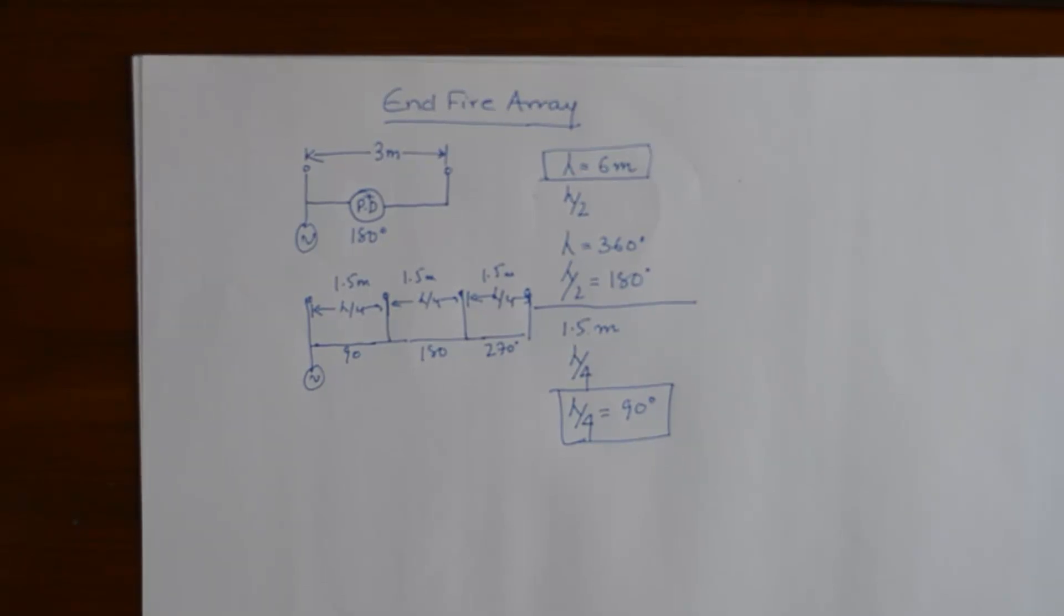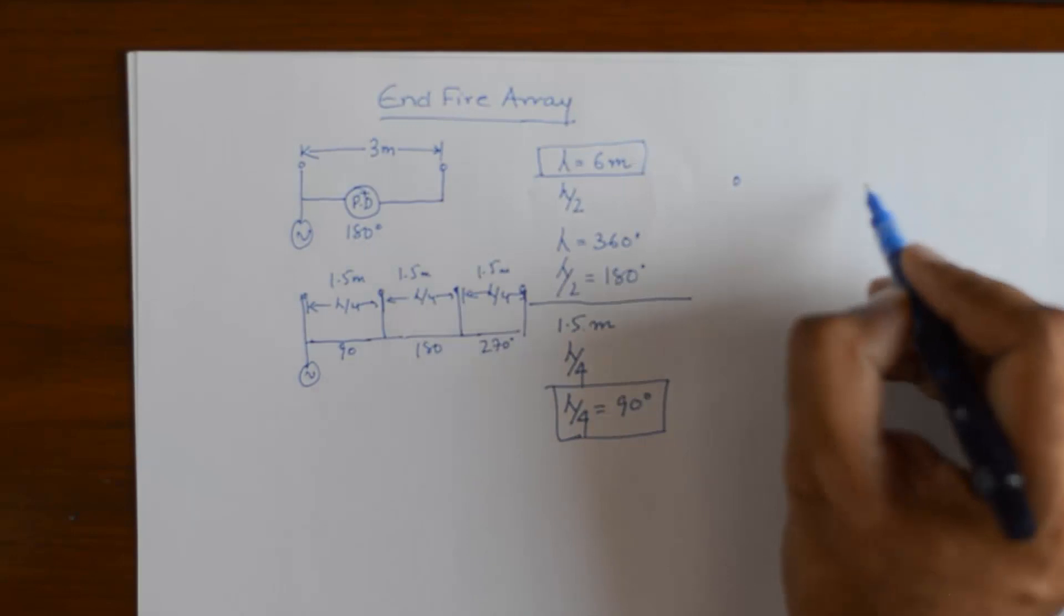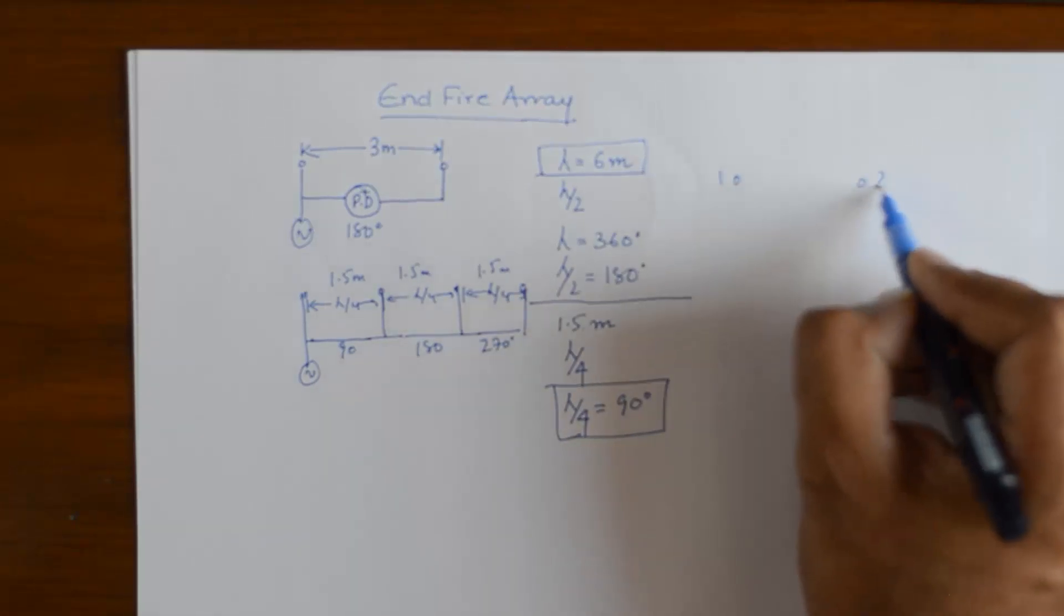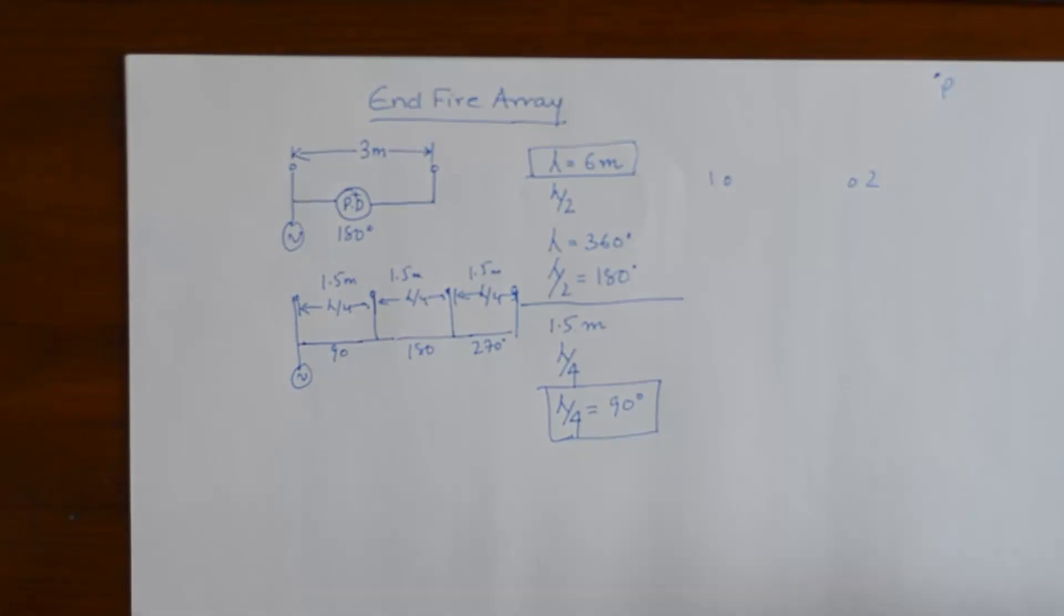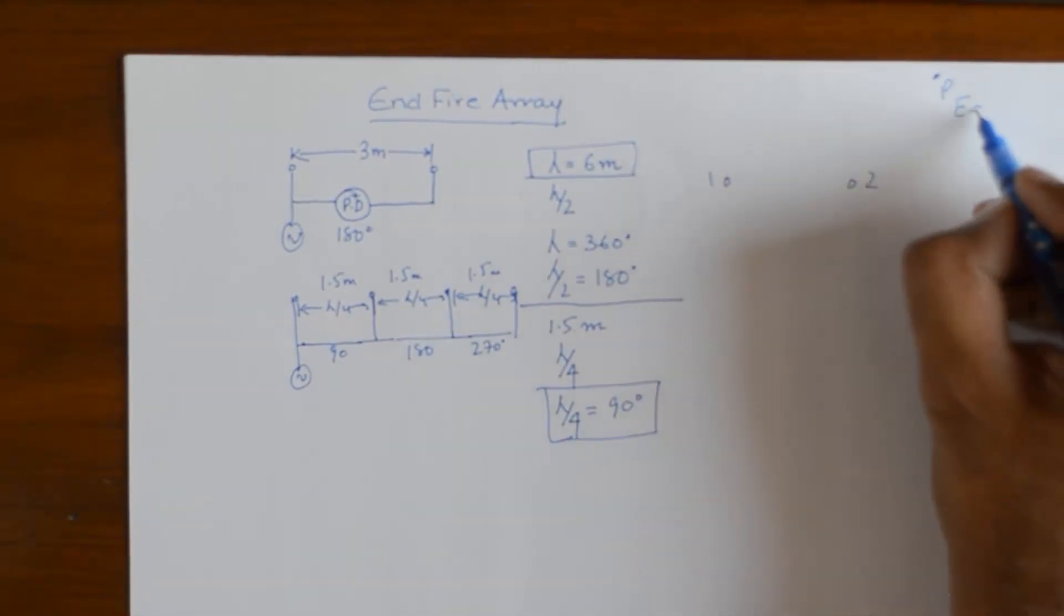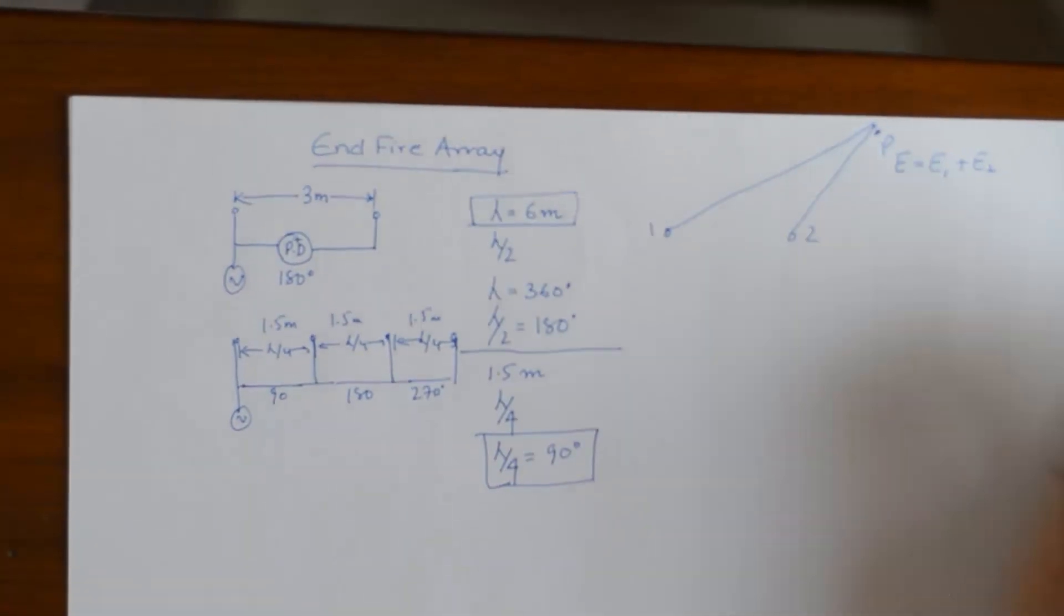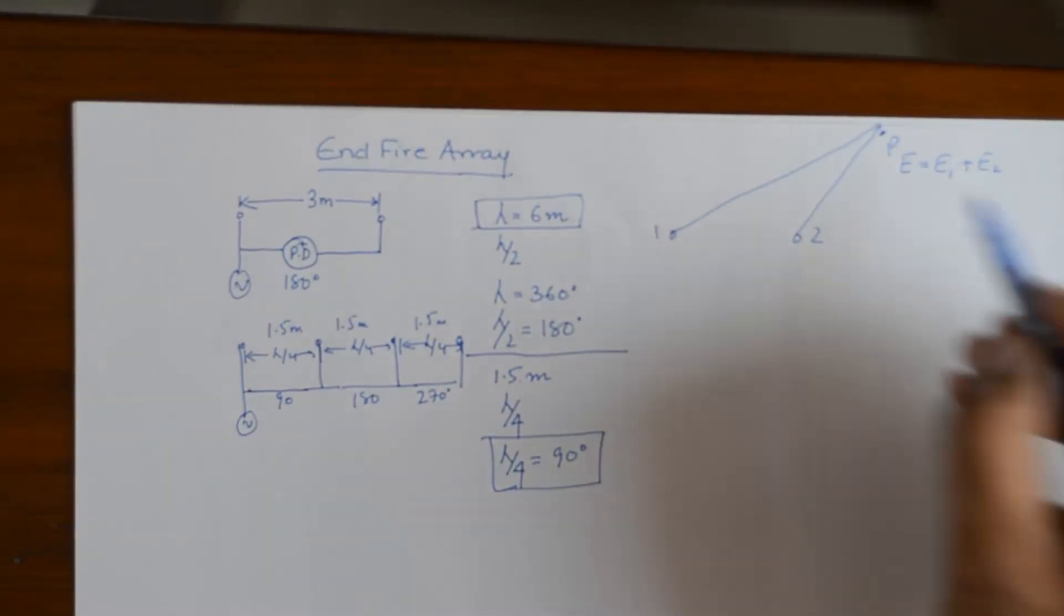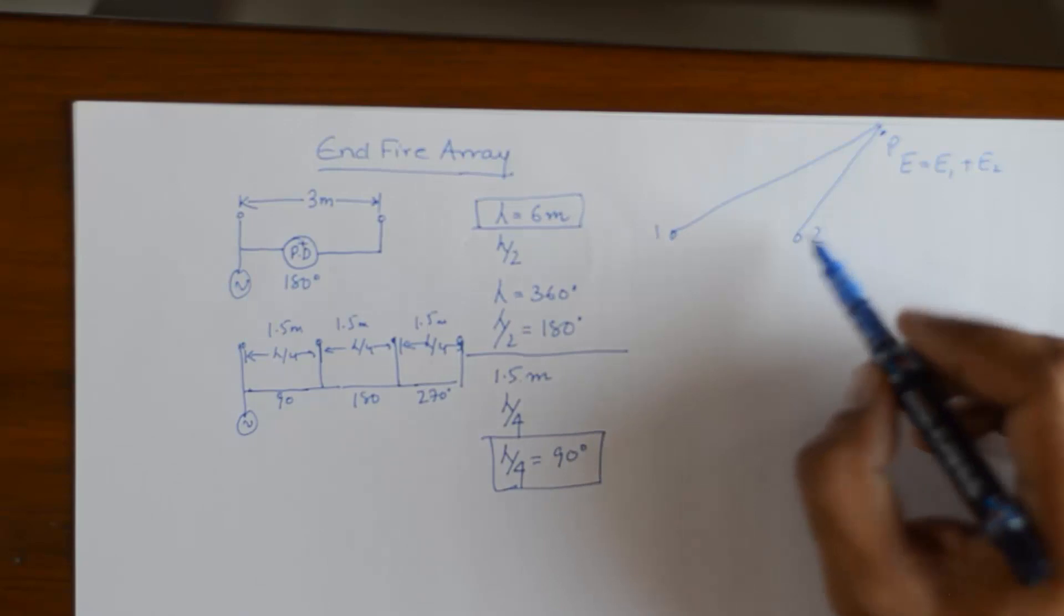So that's the basic design criteria of endfire array. Now once that happens, we consider two point sources just like we did in broadside array and we try to measure the electric field intensity E which will be a resultant of E1 plus E2, the electric field intensity because of point source 1 and because of point source 2.